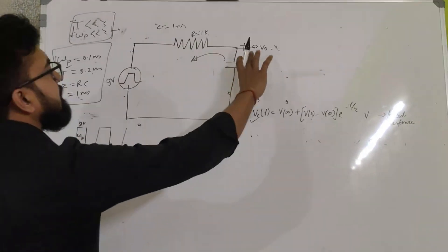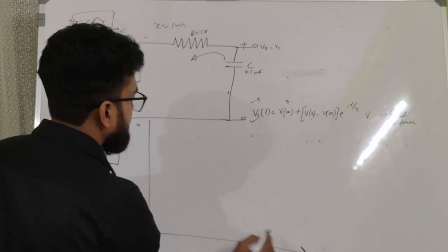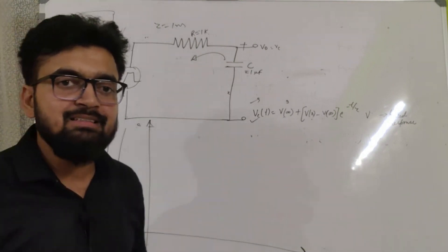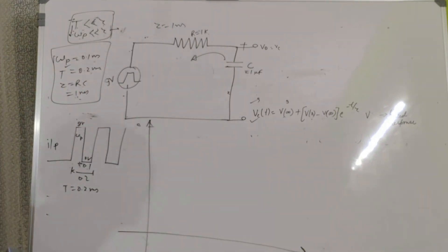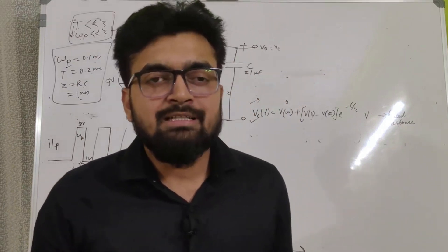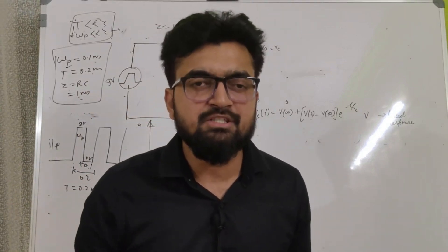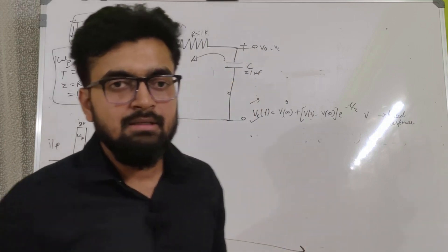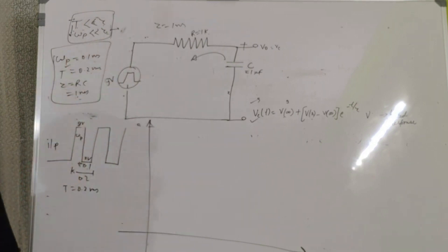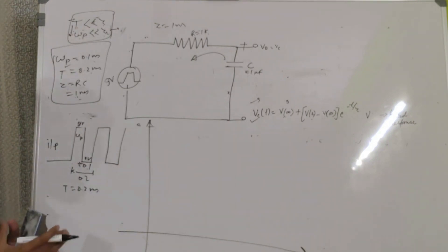Let us try to draw the output waveform across the capacitor for this input waveform. Since both the time period and the pulse width are much lesser than tau, the capacitor will neither charge completely nor discharge completely. The pulse width is 0.1 millisecond while the time constant is 1 millisecond — it is almost one tenth of the time constant — so it will not completely charge.